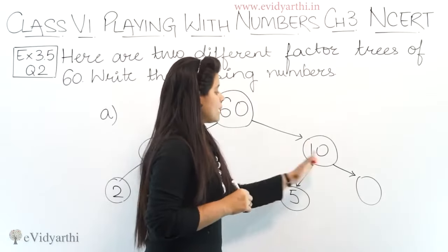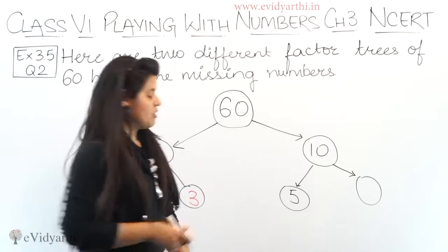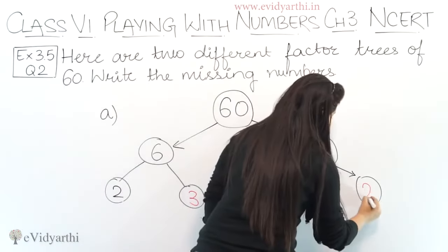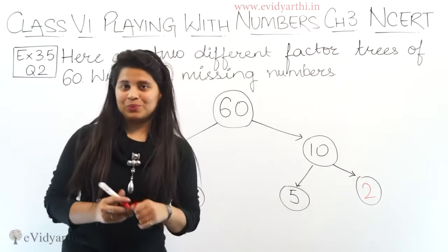Next, we expand 10 into 2 parts: 5 and dash. So what do we multiply 5 by to get 10? 5 into 2. Okay, so the missing numbers are 3 and 2.